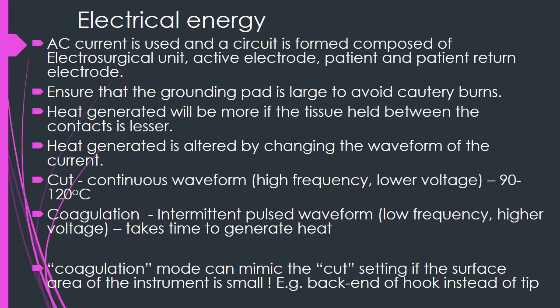For cutting, the temperature is 90 to 120 degrees Celsius, and one uses a very high frequency with a lower voltage. When tissues need to be coagulated, one uses a lower frequency but a very high voltage because it takes time to generate the heat. The coagulation mode will take some time to coagulate, whereas cutting occurs almost immediately. A word of caution: the coagulation mode can actually mimic the cut mode if the surface area of the instrument is too small — for example, if you use the shoulder of the hook instead of the tip, since the tip has a larger surface area while the shoulder is only a pinpoint.